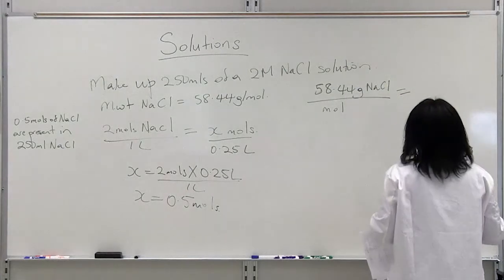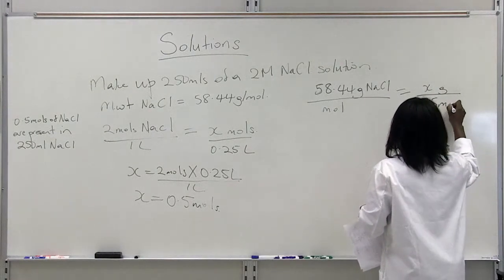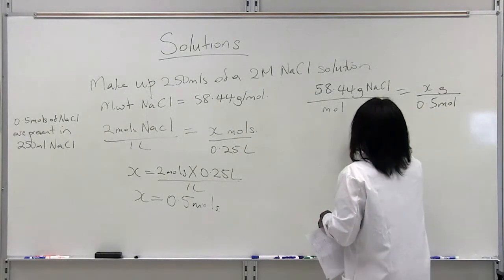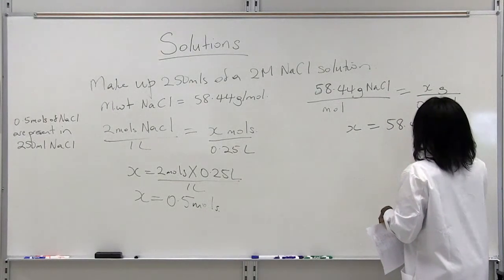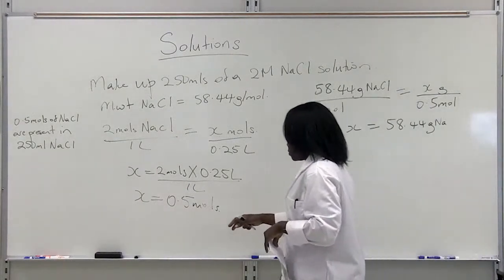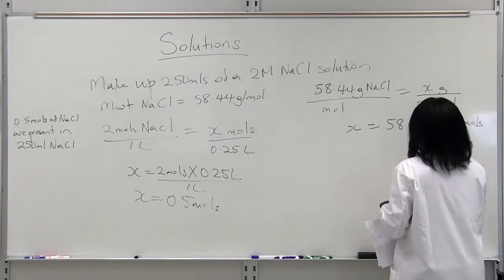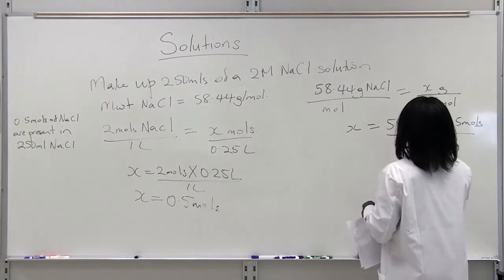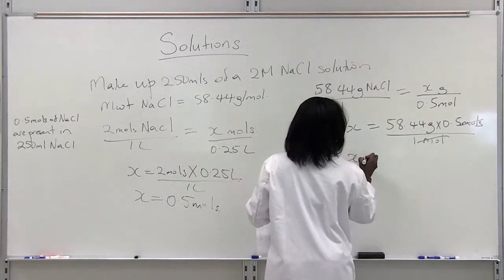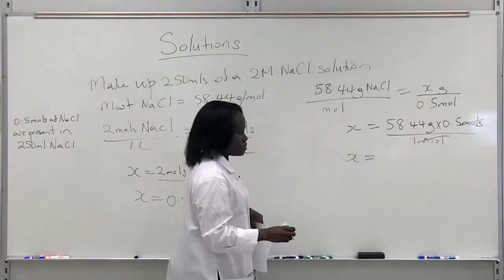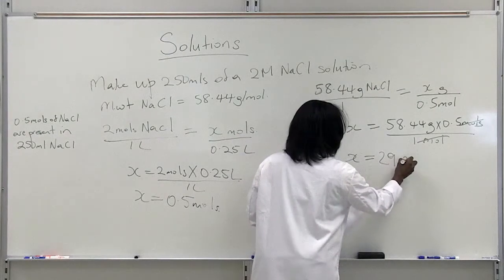How many grams will make up 0.25 moles of sodium chloride? We cross-multiply, which gives us 58.44 grams times 0.25 moles divided by 1 mole. Our mole units cancel out, and we multiply 58.44 by 0.25, which gives us 29.22 grams.